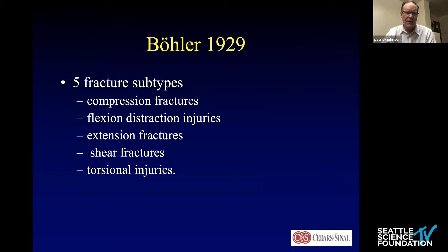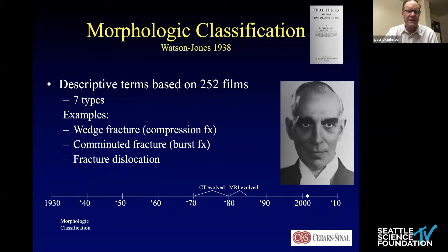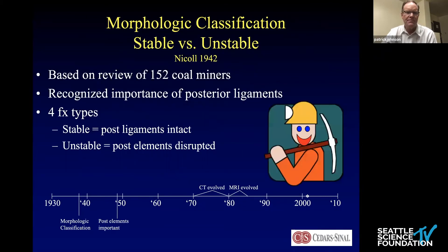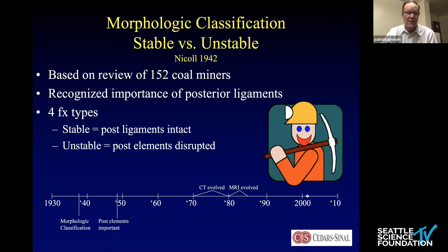Historically, Bowler in 1929 described five different kinds of fractures: complex compression, flexion distraction, extension, shear injuries, and torsional injuries. Watson Jones defined similar fractures in the 1930s with wedge fractures, comminuted burst fractures, and fracture dislocations. Nichols in 1942 looked at coal miners and produced morphologic classifications of stable versus unstable fractures related to posterior ligamentous abnormalities. This was very forward-thinking because it pertains to what we really base a lot of our decision-making on today.